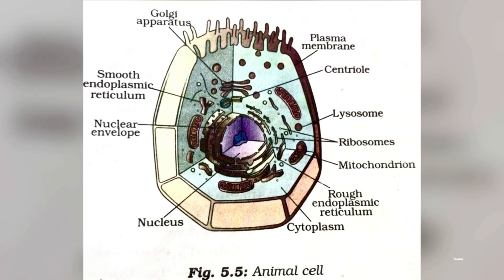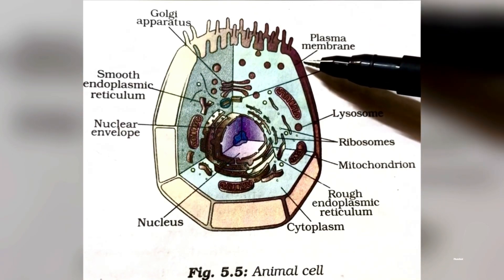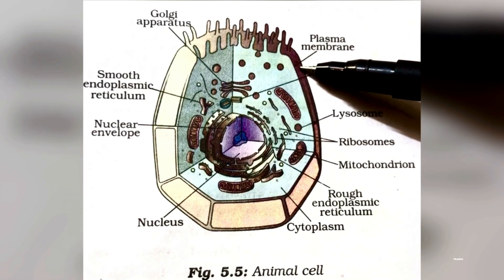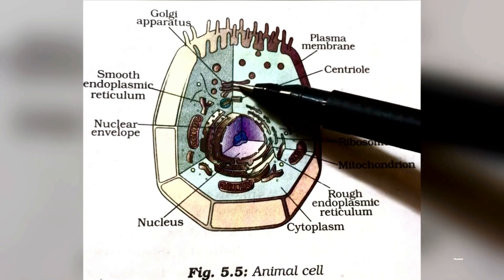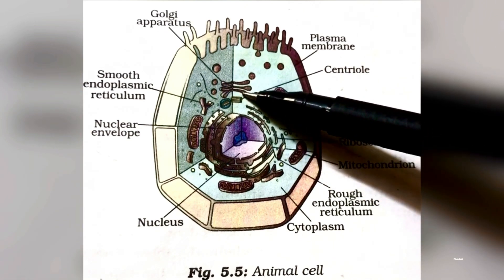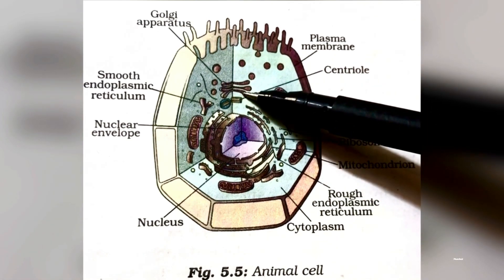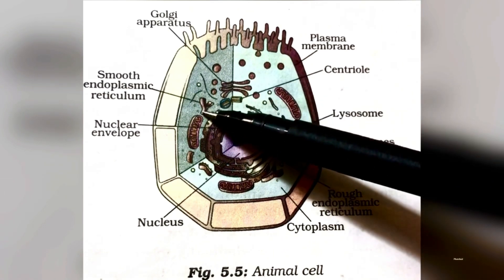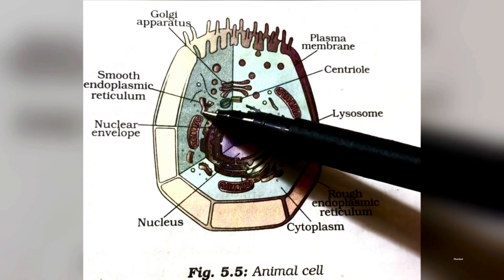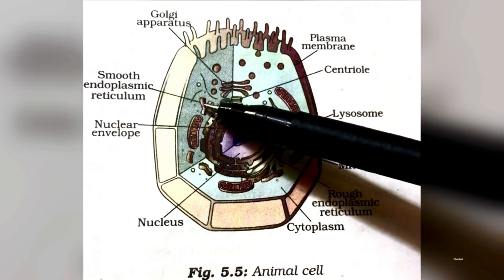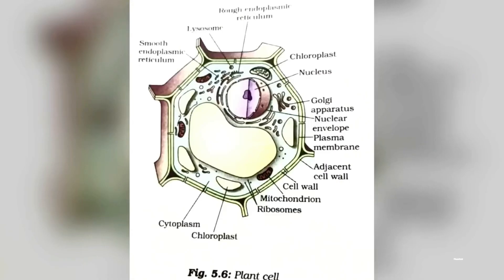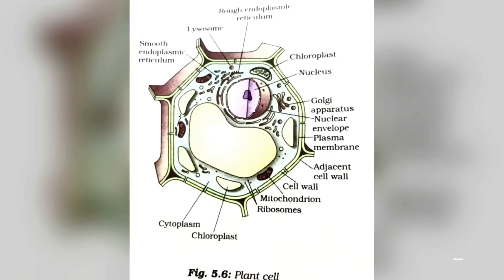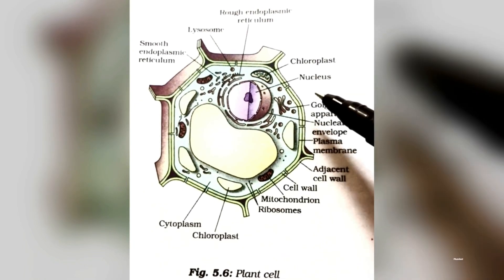Looking at the diagram of the animal cell, we start from the plasma membrane, which is the outermost living layer. Coming inside, we can see the stack-like structures known as the Golgi apparatus, whose main function is storage. Then there is the smooth endoplasmic reticulum — ribosomes are absent here — responsible for the production of fats and lipids. The structure shown here is the mitochondria.